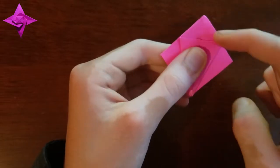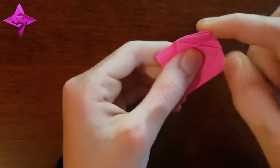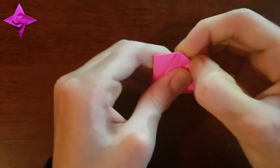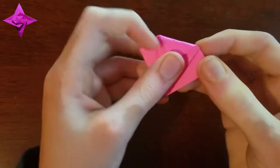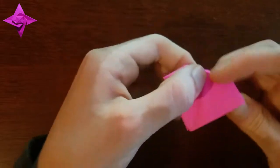Then we're gonna fold along this edge, fold this corner down, then turn over and fold both of these edges to the middle crease again.